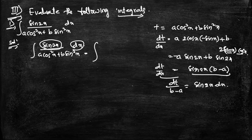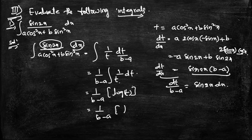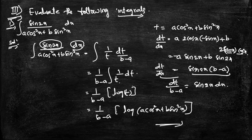Substituting, the integral becomes (1/t)·dt/(b−a), which equals (1/(b−a))·∫(1/t)dt. This gives (1/(b−a))·log t, and substituting back, t = a·cos²x + b·sin²x. So the answer is (1/(b−a))·log(a·cos²x + b·sin²x) + c.